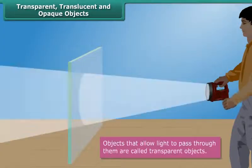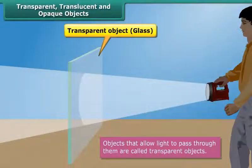Objects that allow light to pass through them are called transparent objects. Most of the light falling upon a transparent object passes through it to the other side, thereby allowing us to see through them.